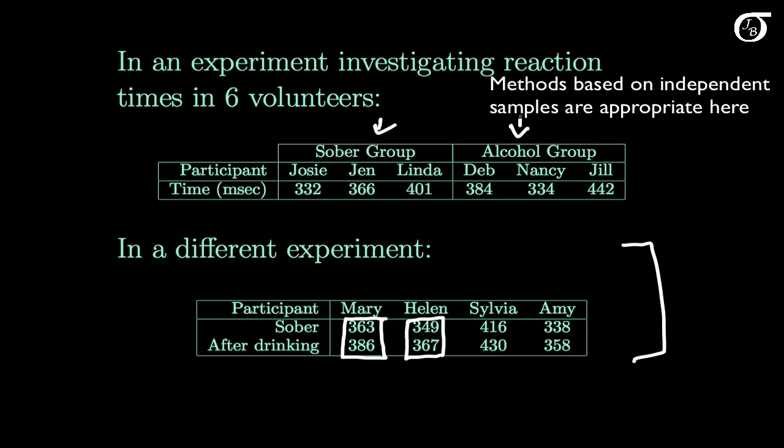We're taking two measurements on the same individual, and these observations are not independent, and so we can't use methods of analysis based on independent samples. We're going to have to use another method of analysis here, and we'll see that we can use a paired difference procedure to analyze this data.